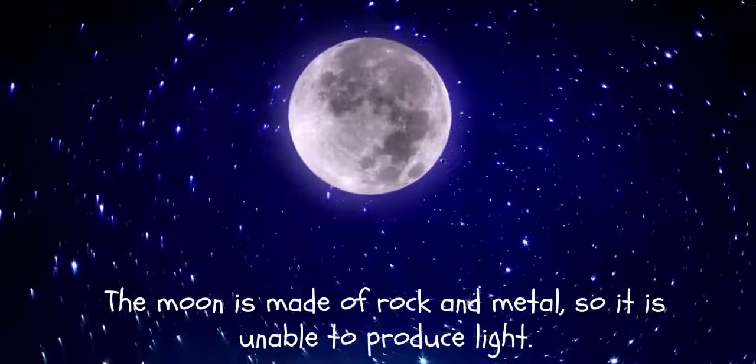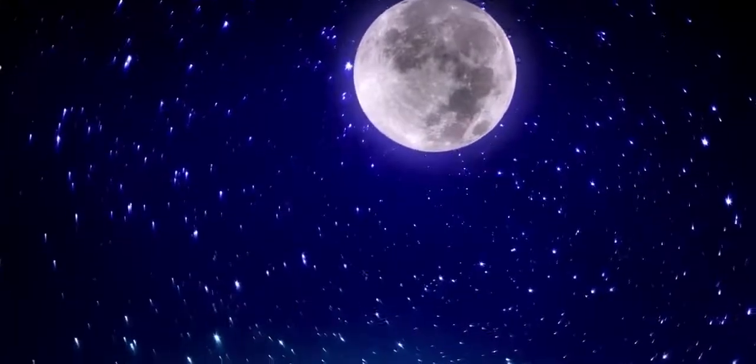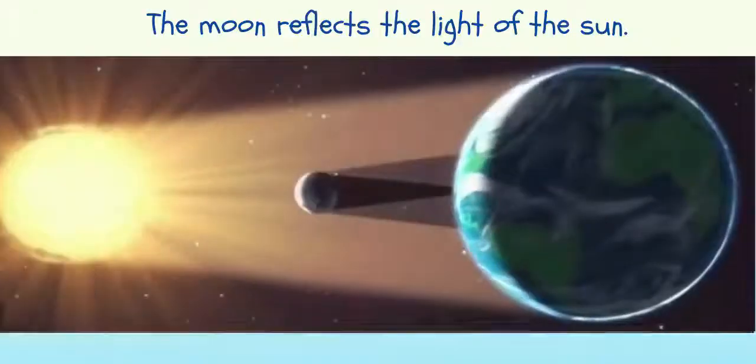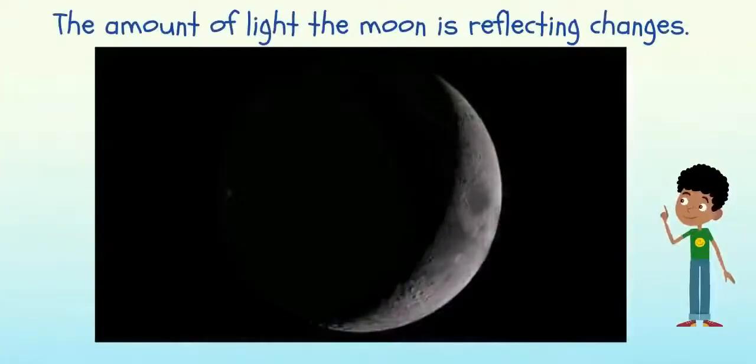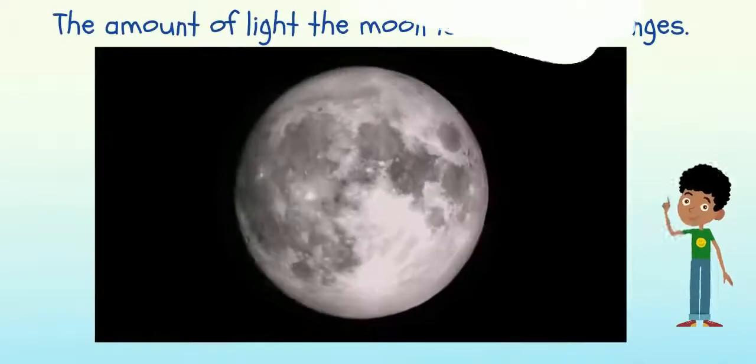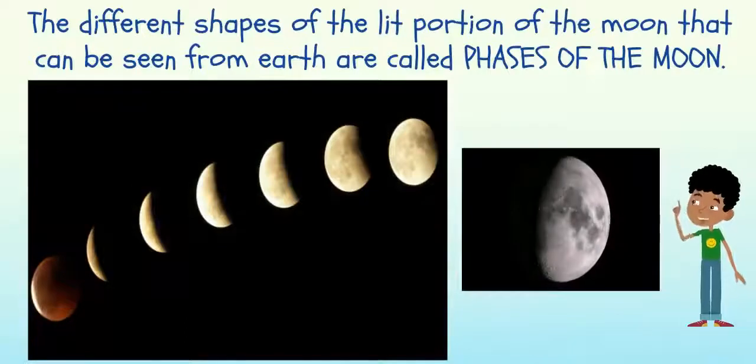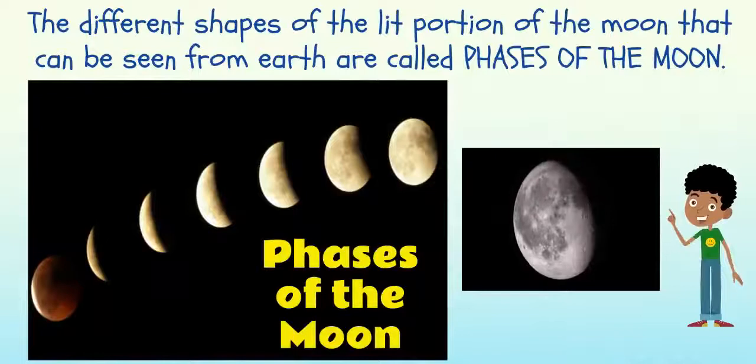The moon is made of rock and metal, so it is unable to produce light. The moon reflects the light of the sun. The amount of light the moon is reflecting changes, and the different shapes of the lit portion of the moon that can be seen from Earth are called phases of the moon.